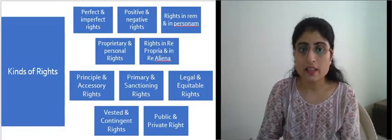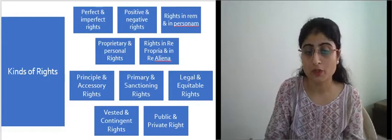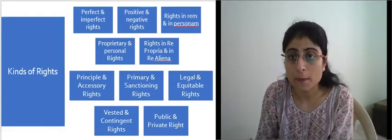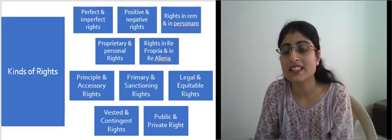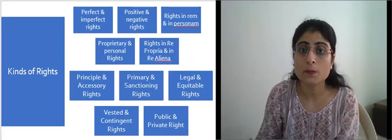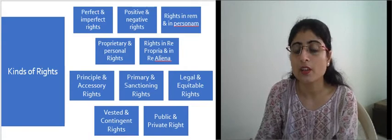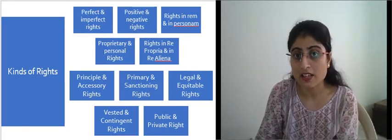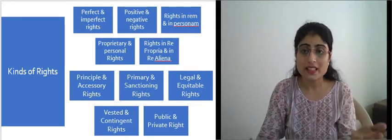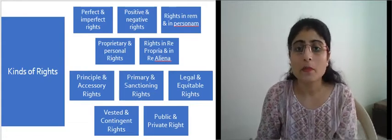Welcome to the second video on jurisprudence concepts under the law. In the first video we discussed the definition of rights given by different jurists. In this video we shall talk about the different kinds of rights. As you can see on the screen, these include: perfect and imperfect, positive and negative, rights in rem and in personam, proprietary and personal, rights in re propria and re aliena, principal and accessory, primary and sanctionary, legal and equitable, vested and contingent, and public and private rights.